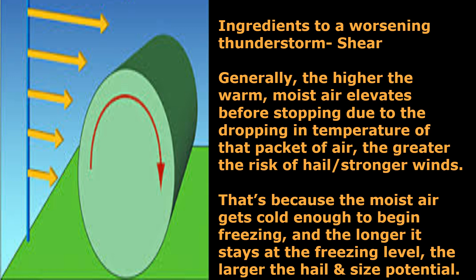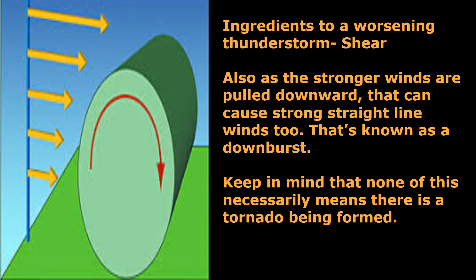Generally, the higher the warm, moist air elevates before stopping due to the drop in temperature of that particular packet of air, the greater the risk of hail and stronger winds. That's because the moist air gets cold enough to begin freezing, and the longer it stays at the freezing level, the greater the potential for hail and larger hail sizes. Also, as the stronger winds are pulled downward, that can cause strong straight-line winds as well. That is what's known as a downburst. Keep in mind that none of this necessarily means that a tornado is being formed at the moment.